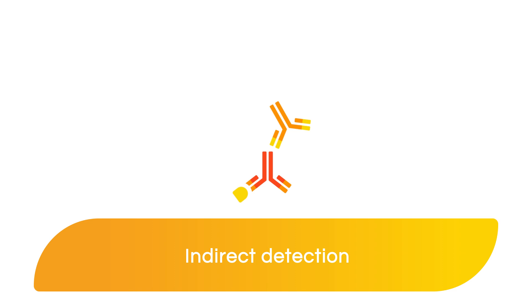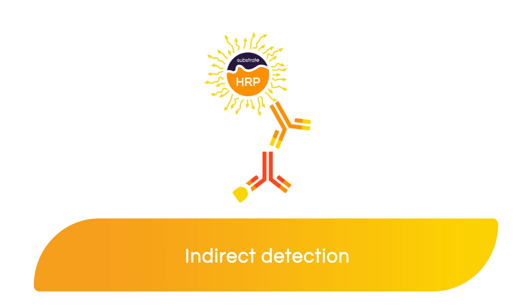A more common method involves indirect detection in which a secondary antibody recognizes and binds to an unlabeled primary antibody on the membrane. The secondary antibody, also called the detection antibody, is labeled with an enzyme and is used for visualization of the protein of interest on the membrane. When a substrate is added to the membrane, the enzyme converts that substrate to light. The photons of light can then be detected by different methods including x-ray film and digital imagers.